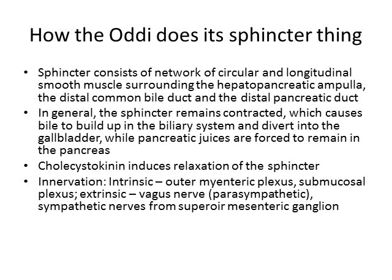The sphincter is a network of circular and longitudinal smooth muscles surrounding the ampulla of Vater, the distal common bile duct, and the distal pancreatic duct. In general, the sphincter is contracted — it clamps down on the hepatopancreatic duct preventing reflux from the duodenum, clamps the distal common bile duct preventing bile from entering the duodenum or pancreatic duct, and clamps the distal pancreatic duct forcing pancreatic juice to remain within the pancreas and not enter the bile ducts or duodenum.